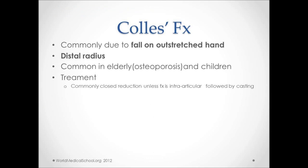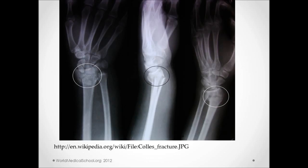A Colles' fracture is commonly due to a fall on an outstretched hand and is a fracture of the distal radius. This is common in the elderly with osteoporosis or in children. Treatment includes a closed reduction unless the fracture is intra-articular, which may require open reduction, followed by casting.